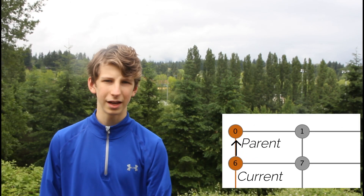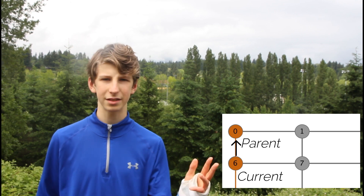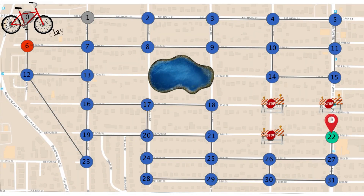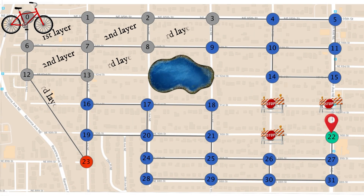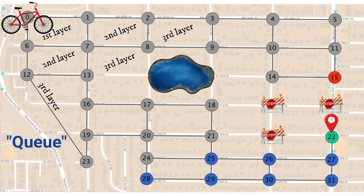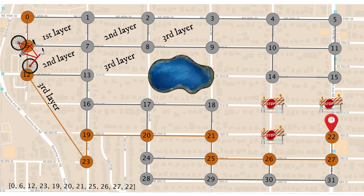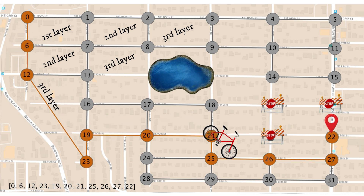Each node holds a value for its parent node — the node that precedes it and is passed to the end node. The algorithm uses a queuing technique by beginning at the start node and adding the adjacent nodes to the queue, then adding the next layer of nodes to the queue, and so on. This repeats until the end node has been found, and a path from the start to the end node will be constructed from the parent node hierarchy.